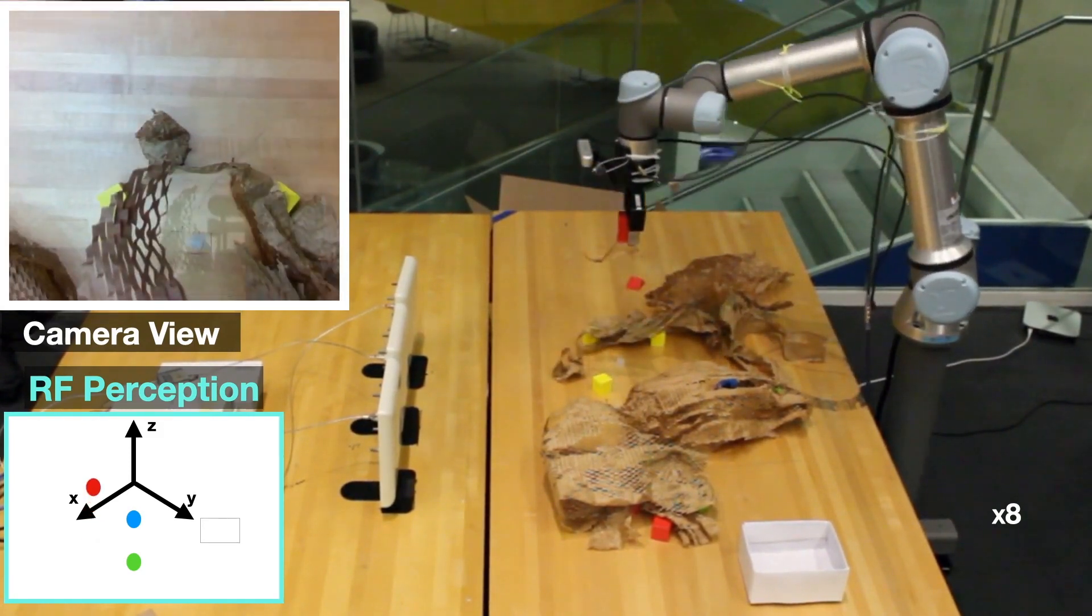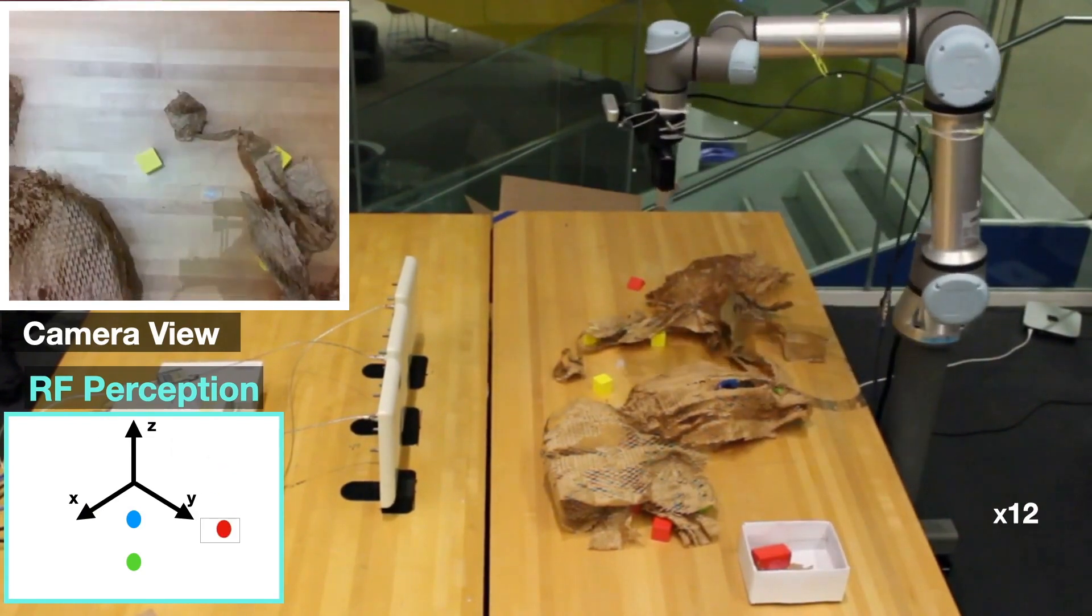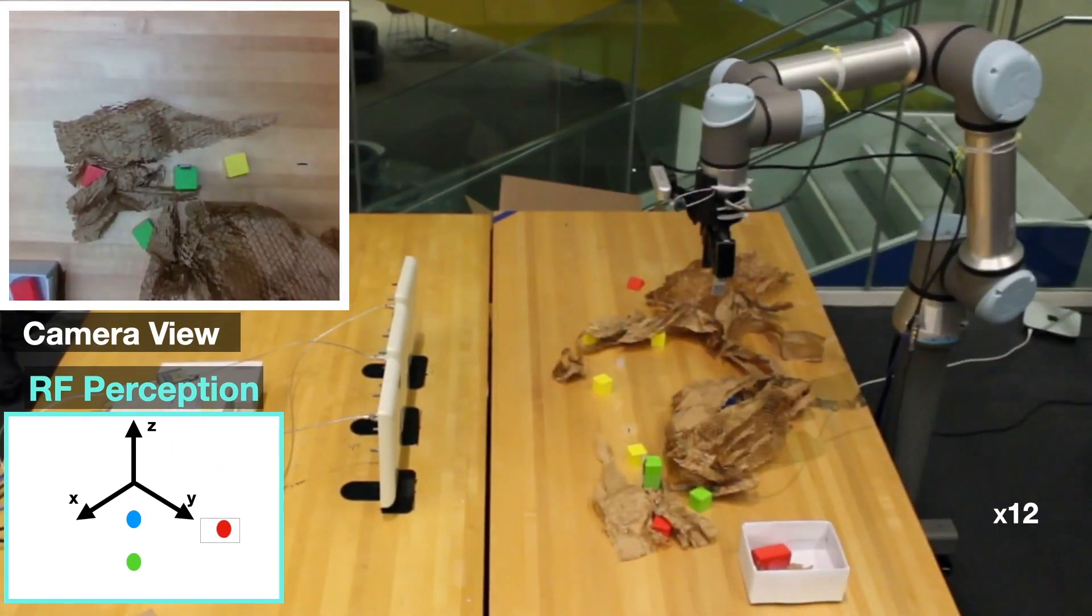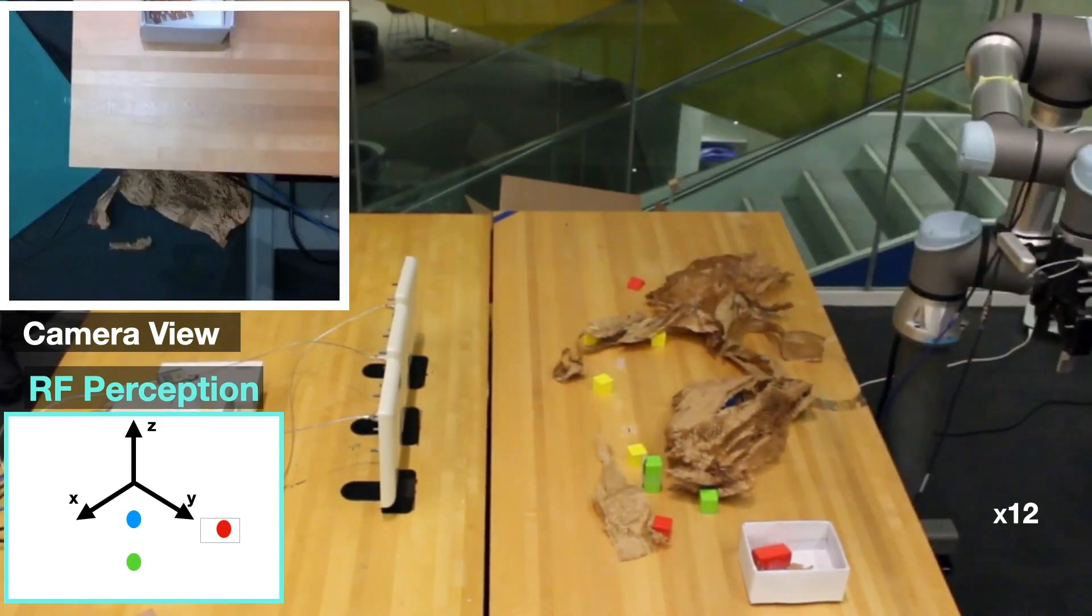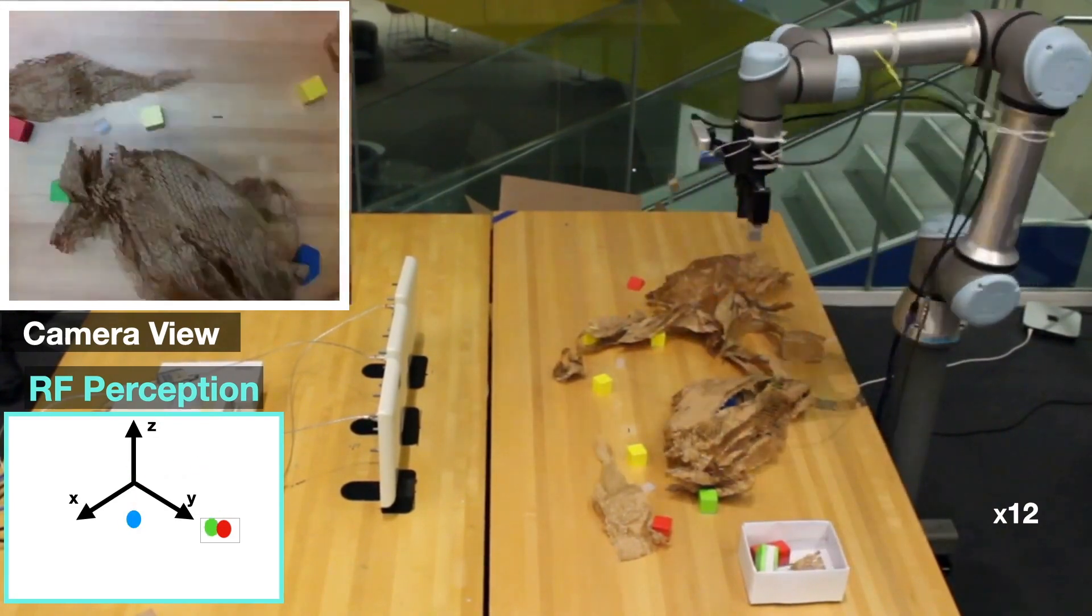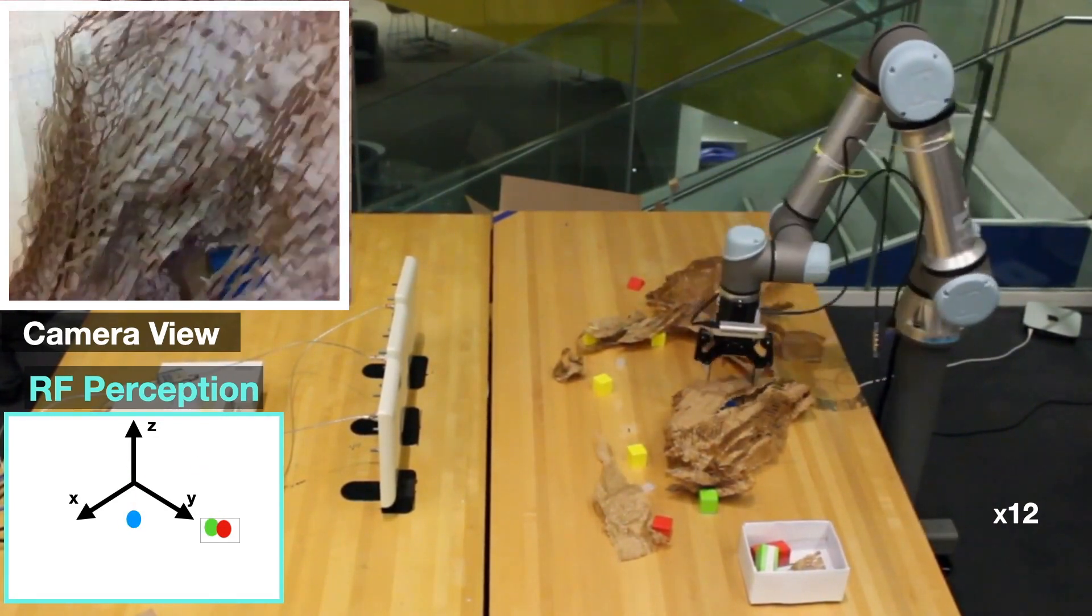As you can see in the bottom left, the robot can track the object's location. This is important because it allows the robot to close the loop and determine if it has missed an object what it was attempting to grasp and needs to try again, or if it has picked up the right item.